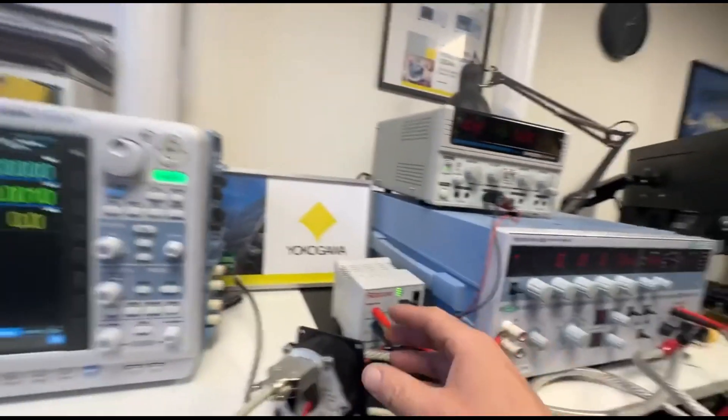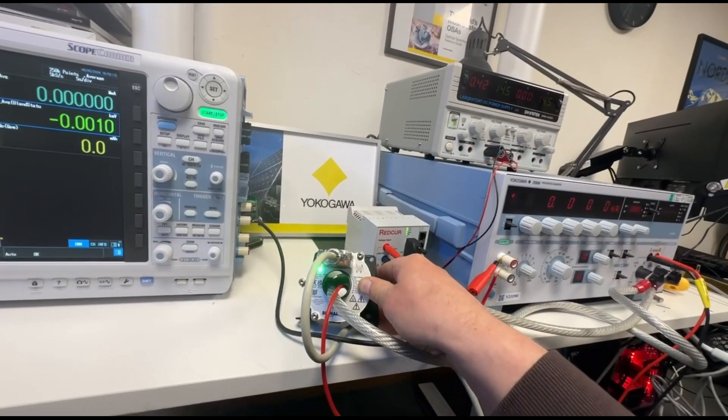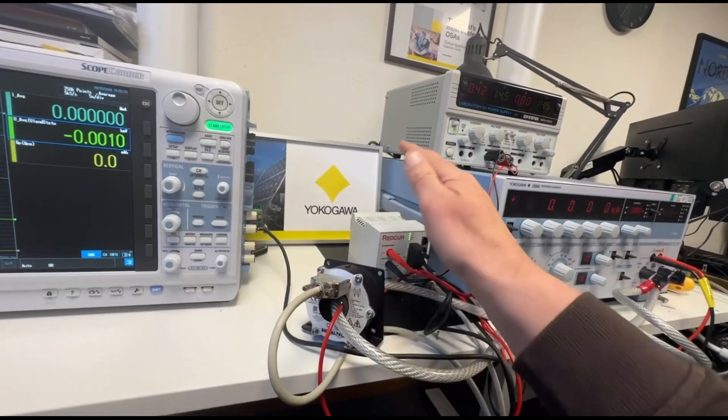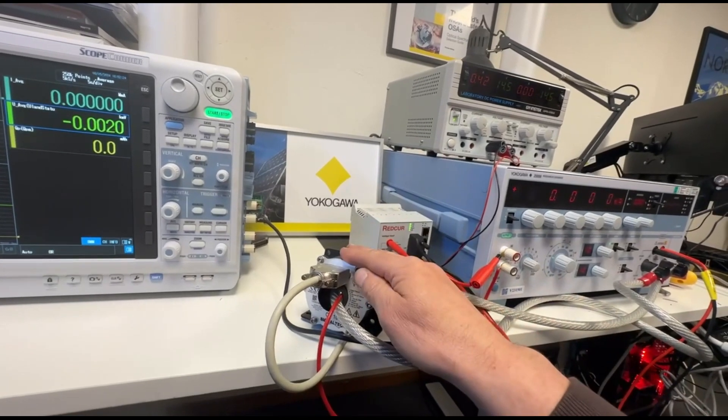So the current, how it works, it's measuring through a current sensor. In this case it's a LEM sensor provided by single tick. It's 100 amp, this one. You can have systems for 1000 amp, 500 amp, depending on your application.